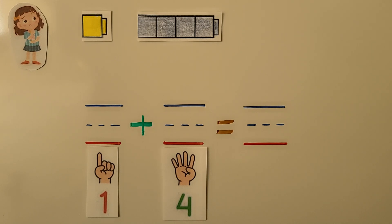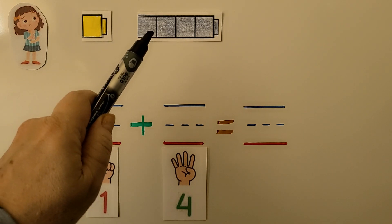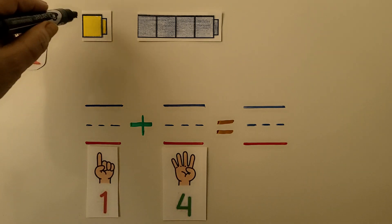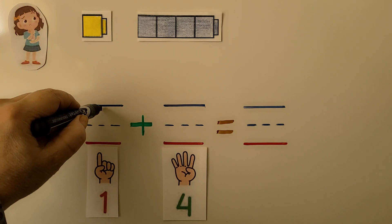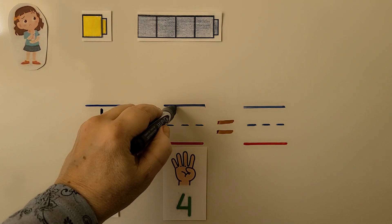Listen carefully to this problem. Emma has one yellow cube and four blue cubes. How many cubes does Emma have? We can write the numbers. For the one yellow, we write it here. For the four blue, we write it here.